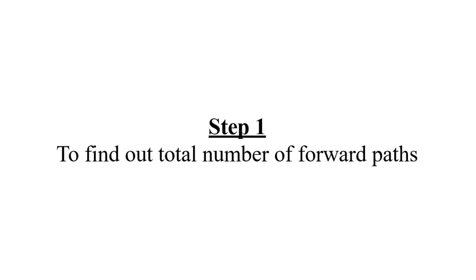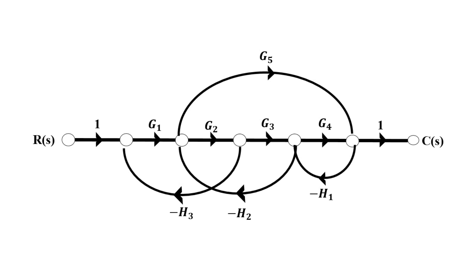First step is to find the total number of forward paths in the graph. Here, the first forward path is passing from G1, G2, G3, and G4. We will name it P1. The gain of path P1 equals the multiplication of all gains coming in this forward path, which are G1, G2, G3, and G4. So the gain of the first forward path equals the multiplication of all gains.